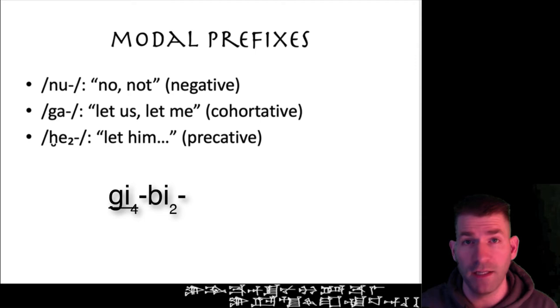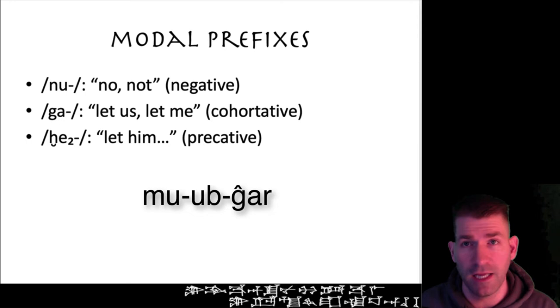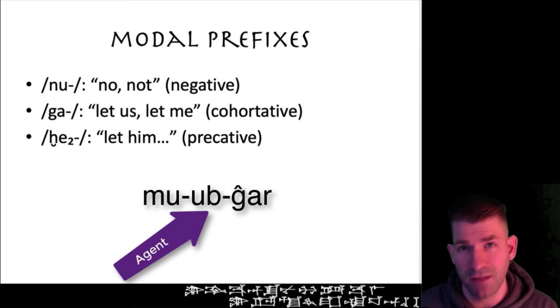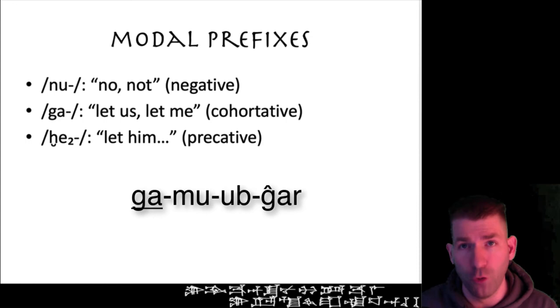Because of that, a b or n will often appear before the verbal base, which indicates the direct object, not the subject of the sentence. For example, if we saw the form mu-ub-gar, we would understand it to be a hamtu third singular inanimate, marked by the b before the verbal base, and translate it 'it set' or 'placed.'